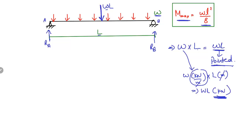The point load W×L acts at the center of the beam because the original load was uniformly distributed. With two supports, the load is split equally, so each support reaction is WL/2. Half the load goes to support A and half to support B. Now we have to draw the shear force diagram for these two support reactions.